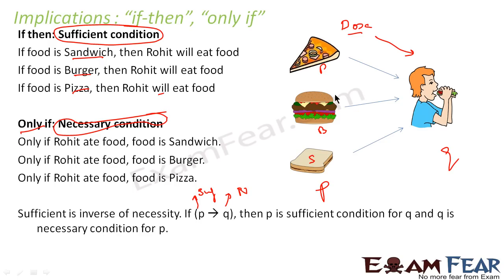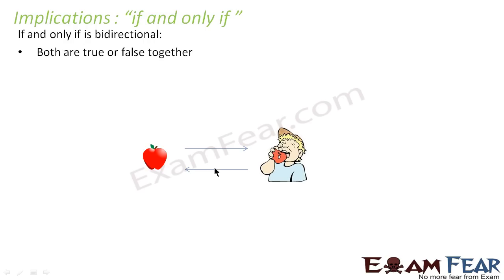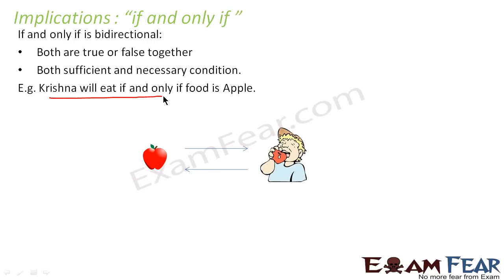So 'if and then' is a sufficient condition, and 'only if' is a necessary condition. Now we will talk about 'if and only if'. Suppose there is a guy named Krishna and he eats only food that is apple. It is bidirectional. If you see: Krishna will eat if and only if food is apple. So if the food is apple, he will eat, and we can also say that if Krishna ate, the food is apple.